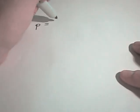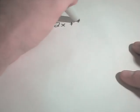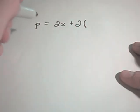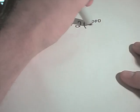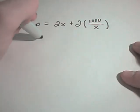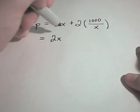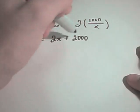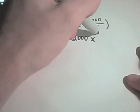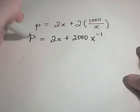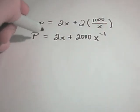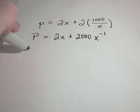If I plug that in now, the perimeter was equal to 2X plus 2 times Y, but Y we said is equivalent to 1000 over X. I'm going to simplify this: we get 2X plus 2000 over X, but I'm going to write that as X to the negative first just so that it'll make taking my derivative a little bit easier.